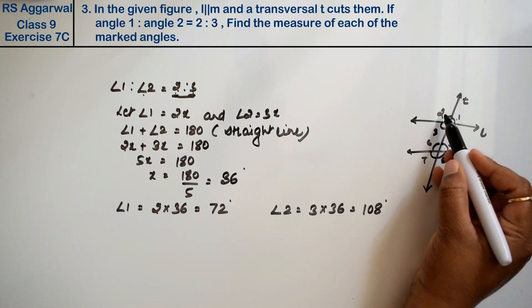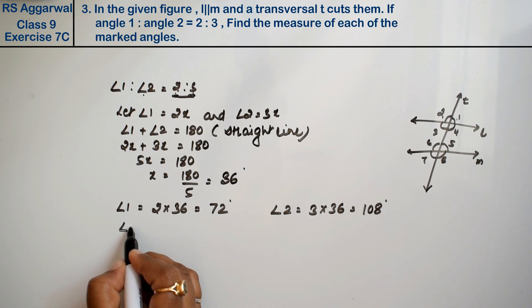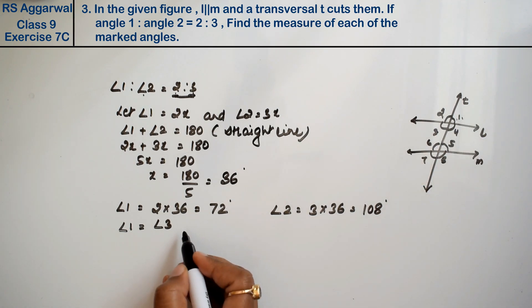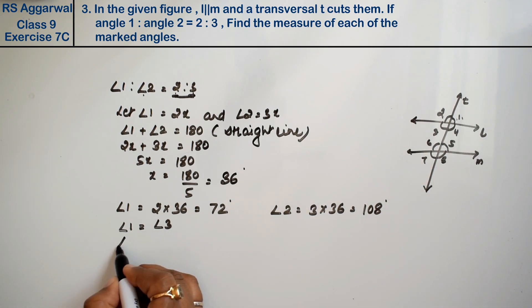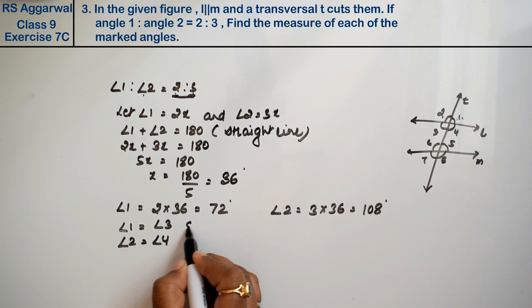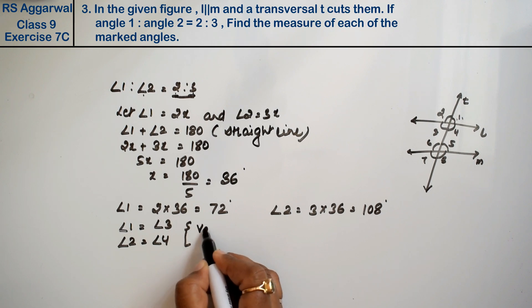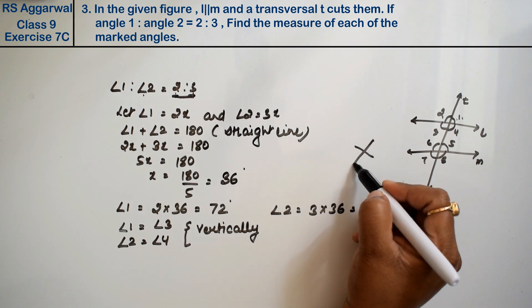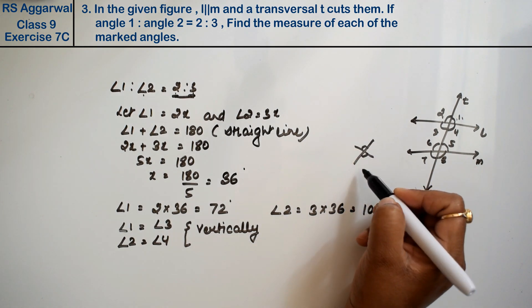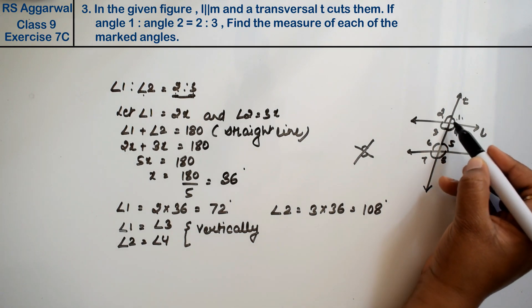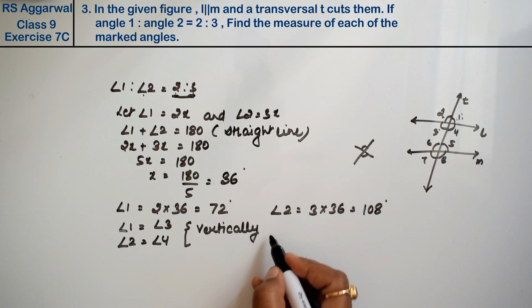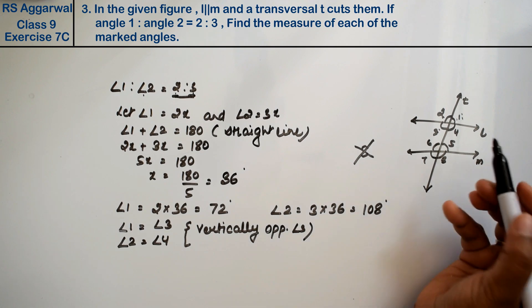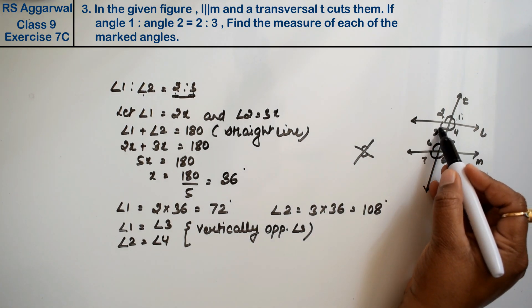Now angle 1 equals angle 3 and angle 2 equals angle 4. Why? Because these are vertically opposite angles, and vertically opposite angles are equal. When two intersecting lines meet, the opposite angles are vertically opposite angles. These are two intersecting lines, so these and these are vertically opposite angles.